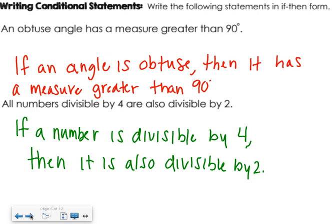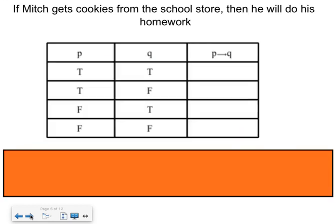We can find the truth value of a conditional statement. And what's nice is it's the same truth table for every single conditional statement. So it's kind of weird to think about, but no matter what your sentence is, the truth table holds true. So we're going to fill this one out together. It says, if Mitch gets cookies from the school store, then he will do his homework. Okay, that's our conditional, right? So P would be our hypothesis, and then Q would be the conclusion.